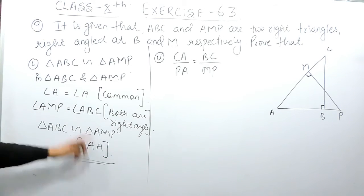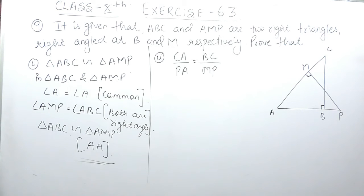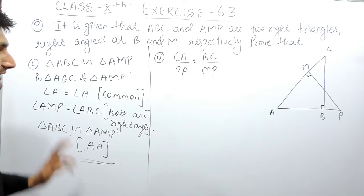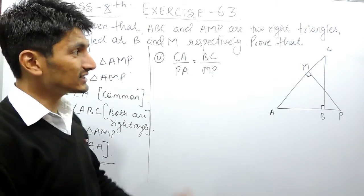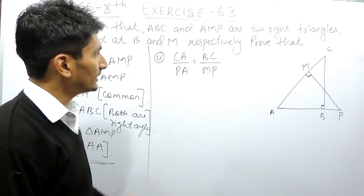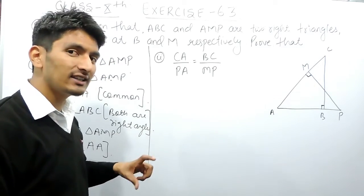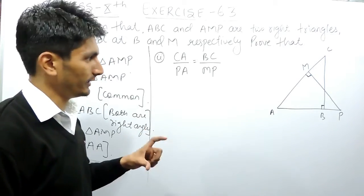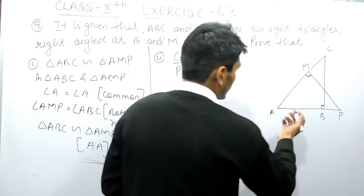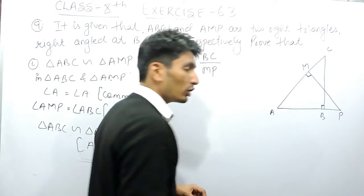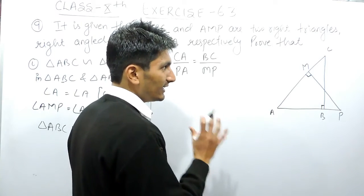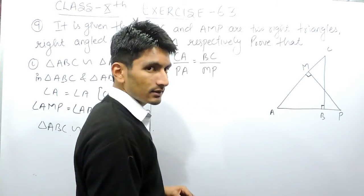This completes the first part. Now, since these two triangles are similar, their corresponding sides must be in proportion, meaning the ratio between their corresponding sides must be equal. The best way to find corresponding sides is by using the angles.